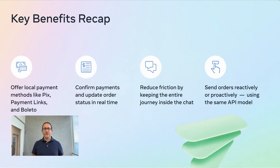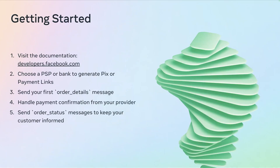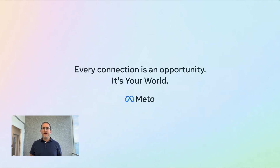To summarize, WhatsApp Payments lets you offer local payment methods like Pix, payment links, and Boleto; confirm payments and update order status in real time; reduce friction by keeping the entire journey inside the chat; and send orders reactively or proactively using the same API model — all powered by the Order Details object. To get started, visit the documentation at developers.facebook.com, choose a PSP or bank to generate Pix or payment links, send your first order details message, handle payment confirmations from your provider, and send order status messages to keep your customers informed. Thanks for joining. With just a few API calls, you can launch a secure, localized payment experience inside WhatsApp, Brazil's most popular messaging app. We can't wait to see what you build. Happy coding, and enjoy the rest of Conversations 2025.